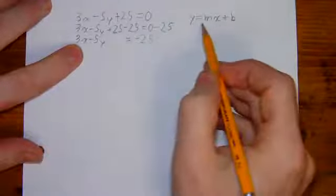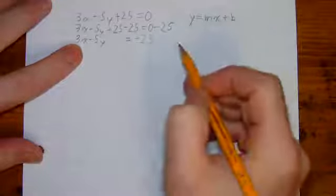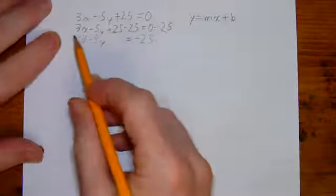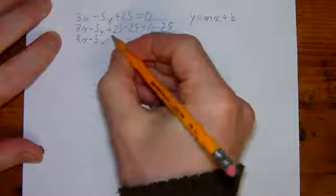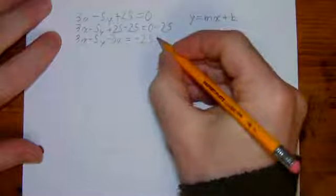Now, in y equals mx plus b form, the x is also on the right side of the equation. So I want to move this 3x out of here because I don't want it on the same side as the y.